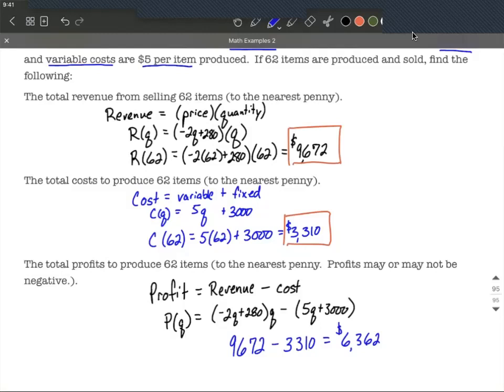You should get the exact same answer if you've evaluated the function that I just created, the second to bottom line, by putting 62 in for each of the queues. I hope this helps out as you're working on creating the revenue, cost, and profit functions based on information with the demand function. Good luck.